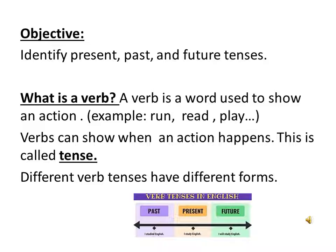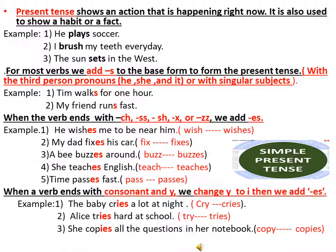Different verb tenses have different forms, and today we are going to study past, present and future tenses. Present tense shows an action that is happening right now. It is also used to show a habit or a fact. For example: he plays soccer; I brush my teeth every day; the sun sets in the west.